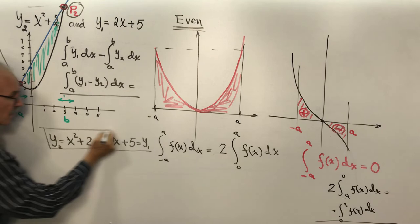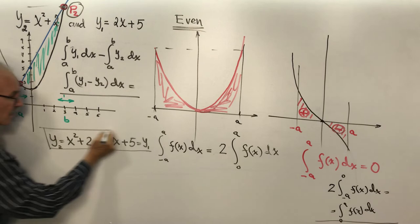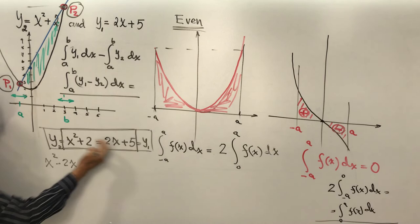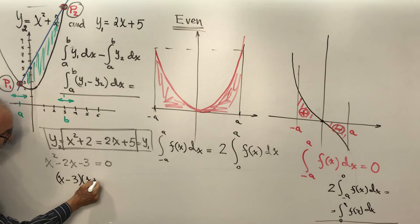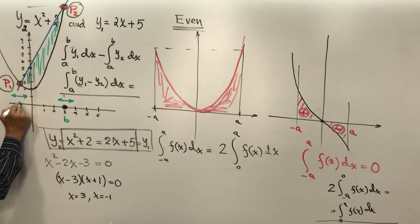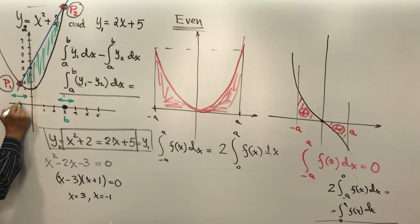First, I have to solve the system of equations: x² + 2 = 2x + 5. Rearranging: x² − 2x − 3 = 0. Factoring: (x − 3)(x + 1) = 0. So x = 3 and x = −1. Now we know the limits of the integral are −1 and 3.